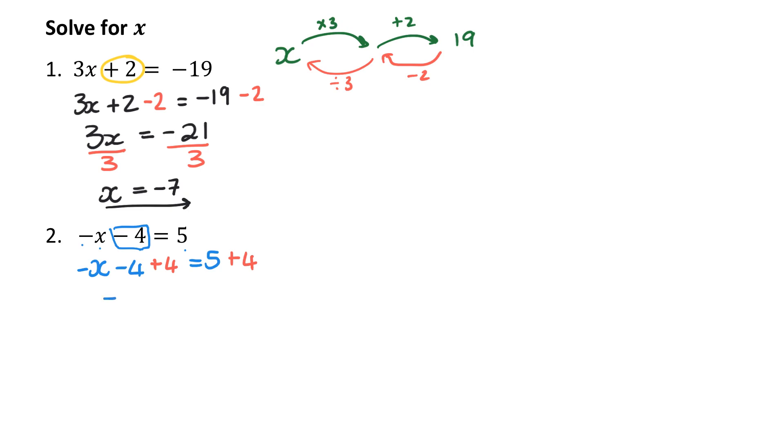On the left, I now just have negative x. And on the right, I have 5 plus 4 is 9. Now I know that negative x is equal to 9. And that's the same as negative 1 times x is equal to 9. So the way I'm going to undo the times by negative 1 is I'm going to divide both sides by negative 1. And I get x is equal to negative 9.